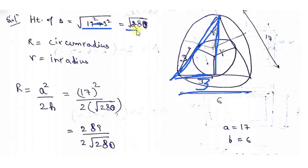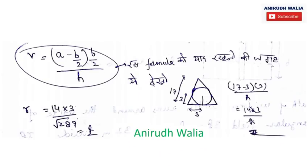A squared is 17 whole squared divided by 2 into root 280. So circumradius value you have got: 289 upon 2 into root 280. I hope circumradius is clear - how to find it for an isosceles triangle.